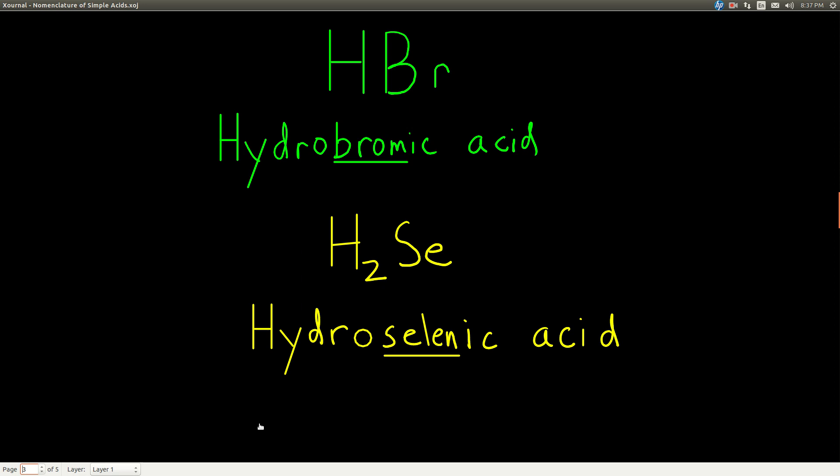For example, HBr starts with hydrogen, so it's an acid. The anion does not contain oxygen, so it's a simple acid. We fill in the blank with the root name of the anion. The anion is bromide, and the root is brom, so we get hydrobromic acid.